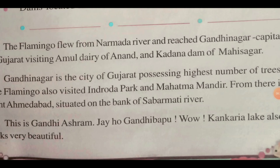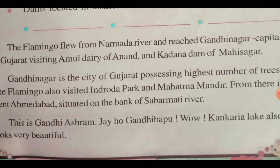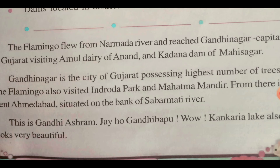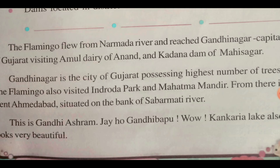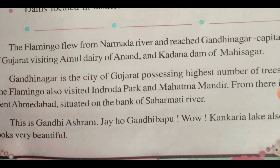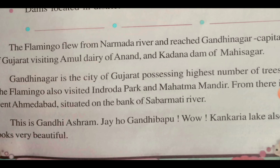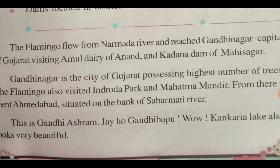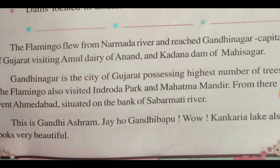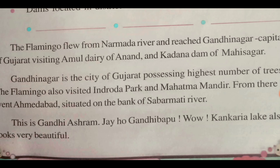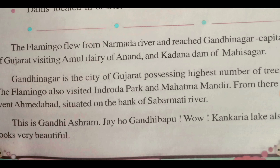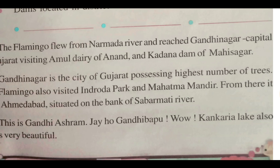Flamingo flew from the Narmada river and reached Gandhinagar, the capital of Gujarat. It visited Amul Dairy of Anand and the Kadana Dam on the Mahisagar river. Then it went to Ahmedabad, situated on the bank of the Sabarmati river, where it saw the Gandhi Ashram and the beautiful Kankaria Lake.